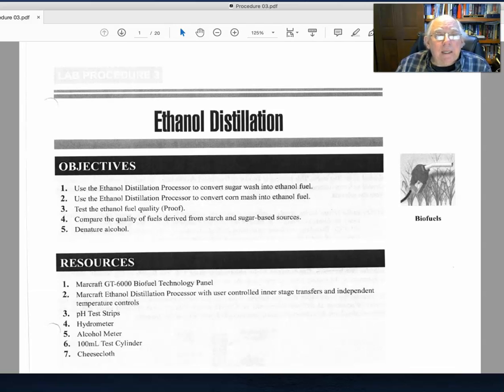We also saw we could take just plain sugar or any fruit juice that had sugar in it, add some type of yeast, and also start the ethanol production or the fermentation process.